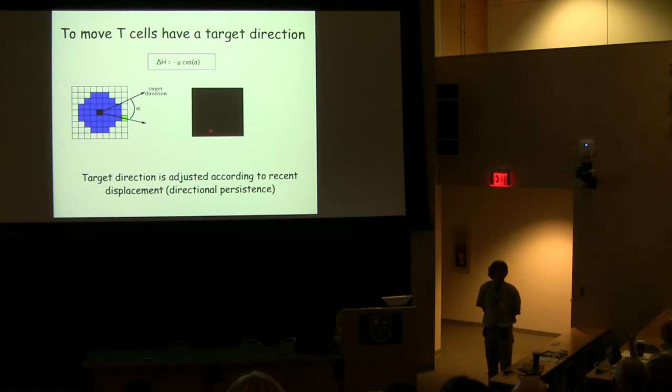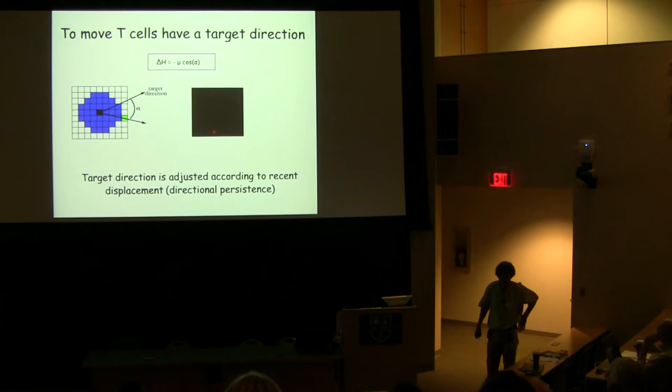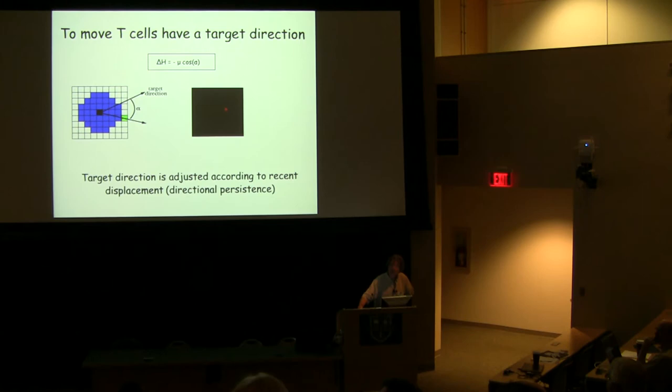Question: does the model account for exogenous reasons why a cell might turn — like a chemokine gradient — that don't depend on contact? Yes, you can, via a similar term where the cell measures the amount of chemokine in front of it and updates in that direction are made more likely. We don't do that here, but it has been done. Our implementation is just phenomenological.